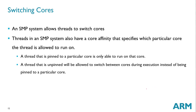In terms of switching cores, an SMP system allows threads to switch cores. You can also specify what we call core affinity, which can fix a particular thread to a specific core. If a thread is pinned to a particular core, it can only run on that core. If it is unpinned, it is allowed to switch between both cores during execution.